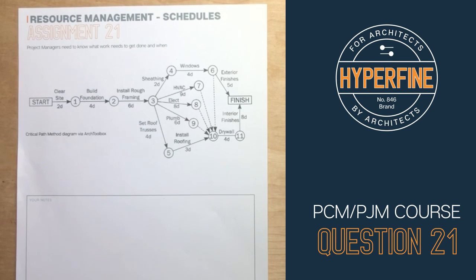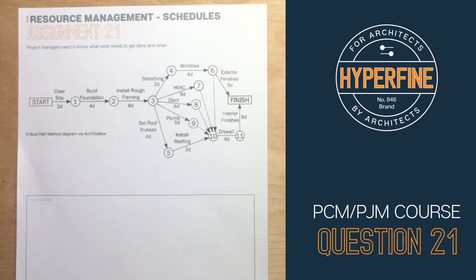Assignment 21. Let's talk about schedules — specifically the critical path method and Gantt charts. We'll explain the critical path method, what the arrows represent, and what the circles represent.